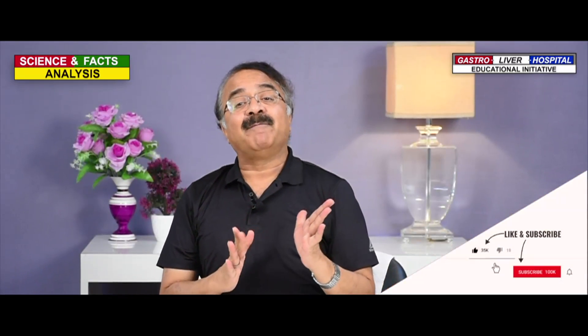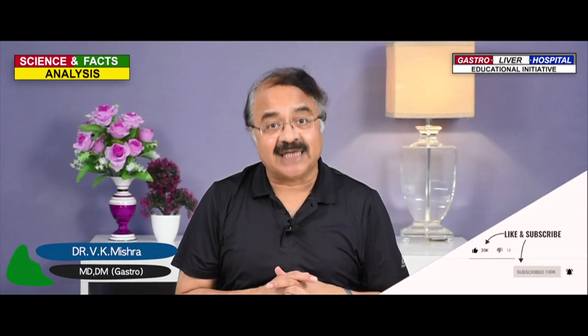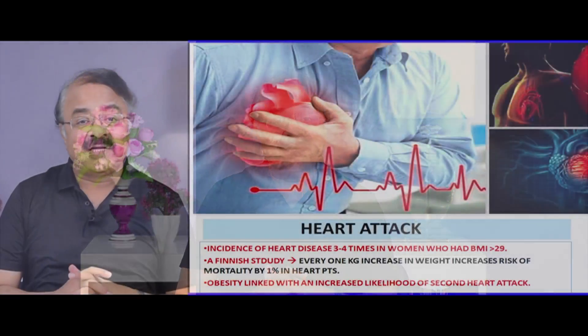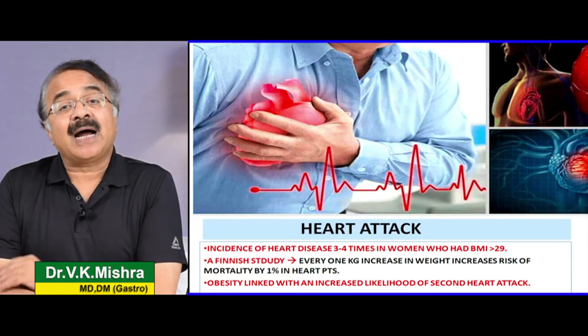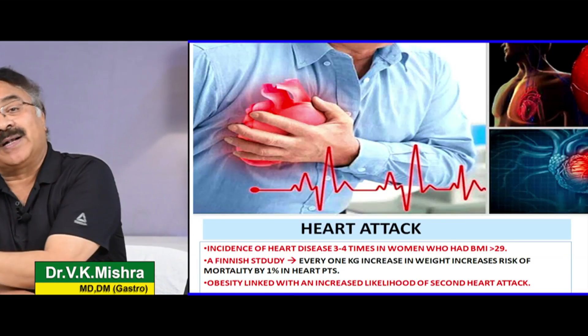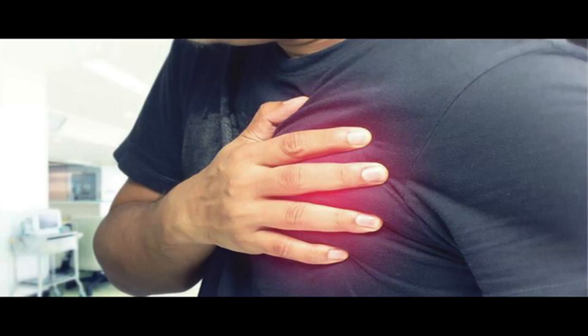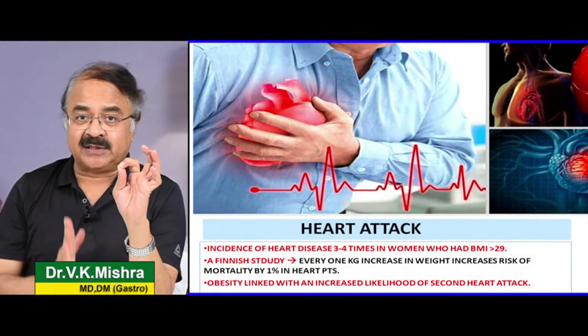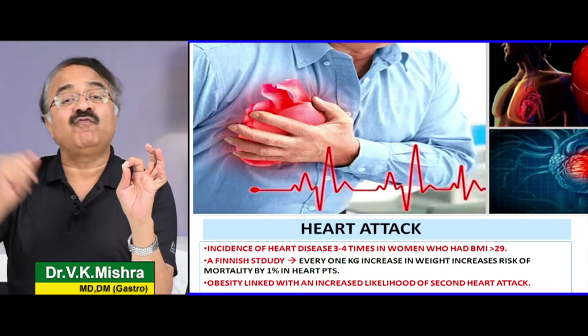अगर आपको मुटापा है या obesity है तो heart attack आने की संभावना हमेशा बढ़ जाएगी। Science मानती है कि अगर आपका BMI 29 से ज़्यादा है और आपका एक किलो वजन normal से ज़्यादा होता है, तो एक percent risk heart disease होने की बढ़ जाती है। इसका मतलब यह है कि आप एक किलो भी ideal weight से उपर जाते हैं तो एक percent risk heart की बीमारियों की तरफ move हो जाती है।